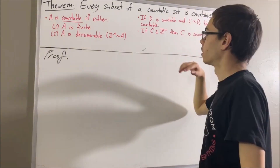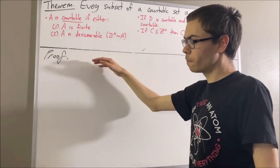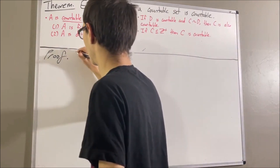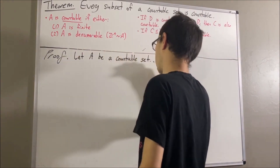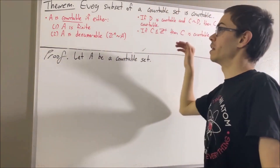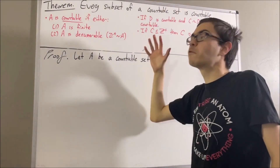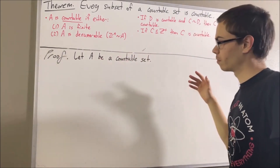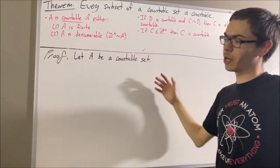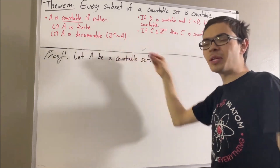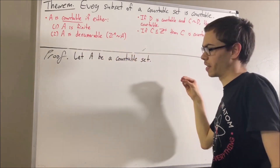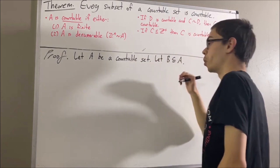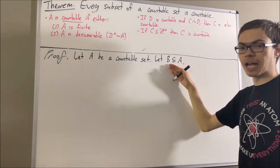Now let's get into the proof. To start, let's give ourselves a countable set A. What we're trying to prove is that every subset of A is also countable. Since we're trying to prove a statement about every subset of A, let's take an arbitrary subset of A — I'll call it B. The whole goal is to show that B is countable.